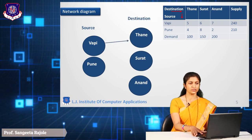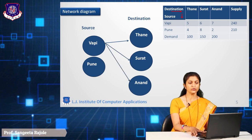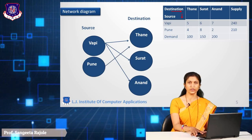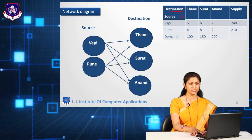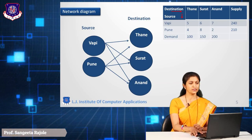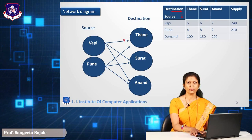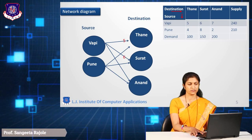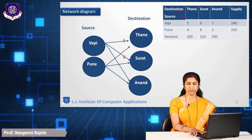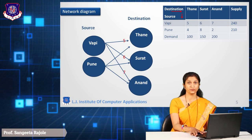If you want to transfer the goods from source to destination, then Wapi can transfer goods to Thane, to Surat, and to Anand. Likewise, Puni can also transfer to Thane, Surat, and Anand. This is the simple network diagram. Now we will represent the table values in this network diagram. The cost from Wapi to Thane is 5 rupees per unit, from Wapi to Surat is 6 rupees, and from Wapi to Anand is 7 rupees per unit.